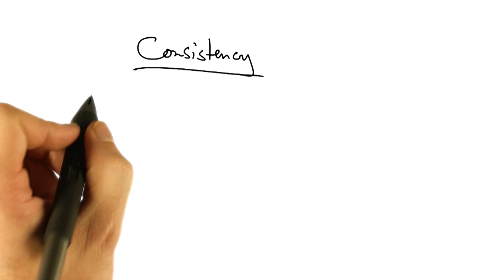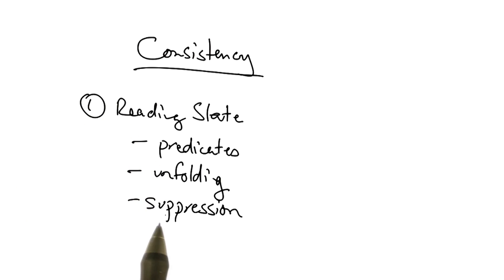So to remind you where we are, we talked about problems with consistency when reading state from the network, and we talked about three approaches to helping guarantee consistency when reading state: predicates, rule unfolding, and suppression.